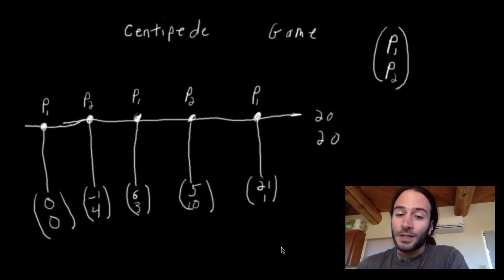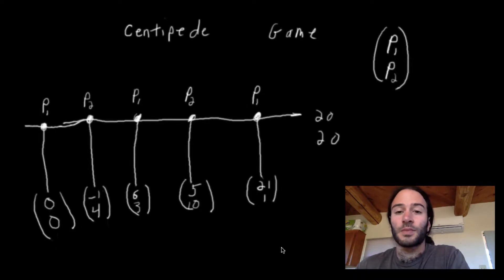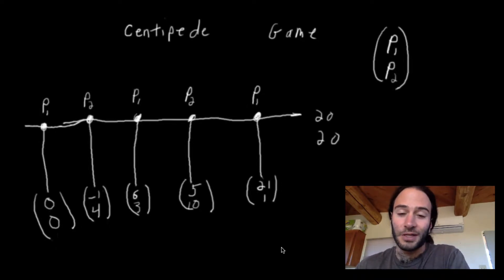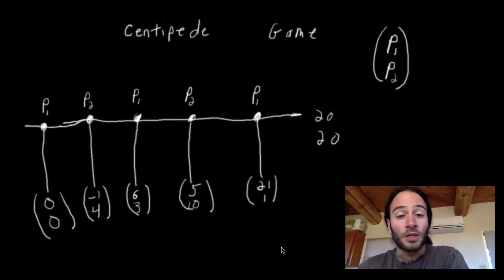So we see that if they both choose to keep going the whole way through, they'll each get a payoff of 20. What we're going to see, unfortunately — and I'm ruining the punchline here — is that under full rationality assumptions, this will never happen, and we're going to see this through backward induction.